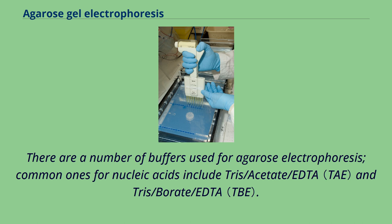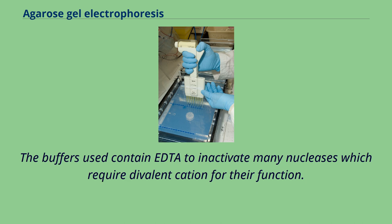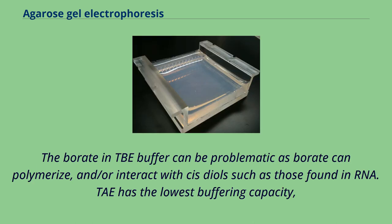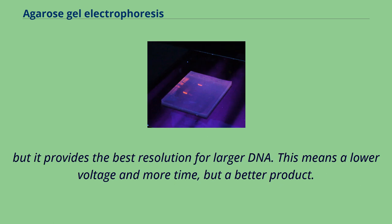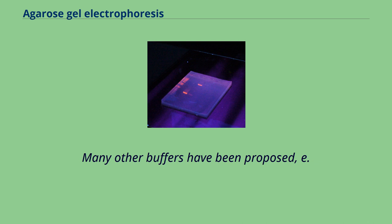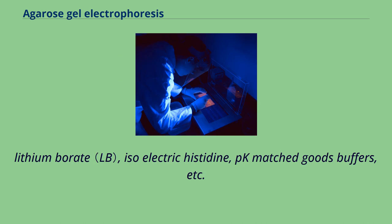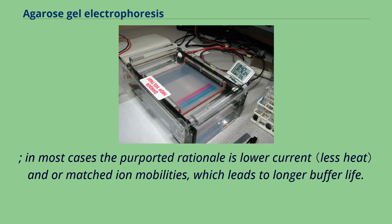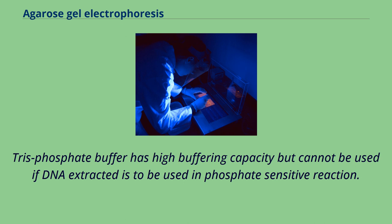The buffers contain EDTA to inactivate nucleases which require divalent cations for their function. TBE buffer can be problematic as borate can polymerize and/or interact with glycols such as those found in RNA. TAE has the lowest buffering capacity but provides the best resolution for larger DNA, meaning lower voltage and more time but a better product. Tris-phosphate buffer has high buffering capacity but cannot be used if the extracted DNA is to be used in phosphate-sensitive reactions. A newer buffer (POUND) is relatively ineffective in resolving fragments larger than 5 kbp, but with its low conductivity a much higher voltage could be used, resulting in shorter analysis time for routine electrophoresis.